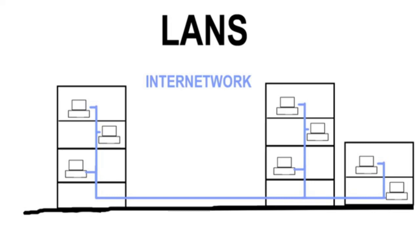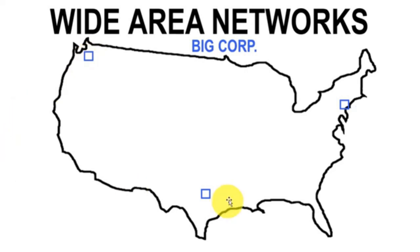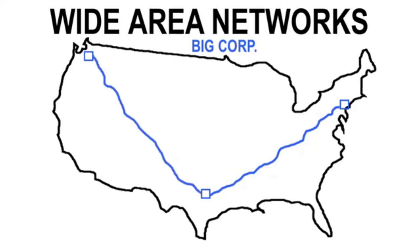It's also possible to have a computer network where hosts are very widely distributed geographically. When we have that situation, we're talking about a wide area network. Basically, a wide area network is a group of interconnected LANs separated geographically. For example, suppose we have a company named Big Corp with an office in New York City, one in Austin Texas, and one in Seattle Washington. Users in these different locations occasionally need access to information at these various sites, so we've connected them together — making these local area networks inter-networked into a wide area network.